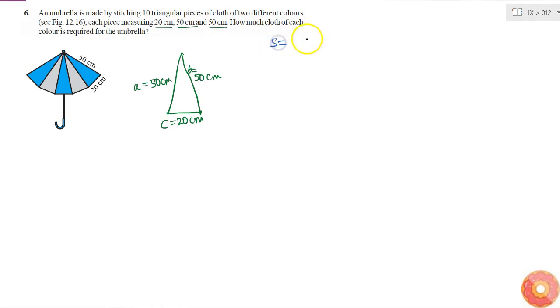So before that I need to find the semi-perimeter which is A plus B plus C by 2, that is equal to 50 plus 50 plus 20 by 2 or 60cm. So if this is the semi-perimeter, then by Heron's formula...